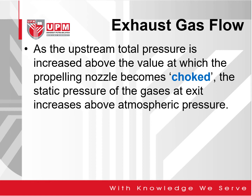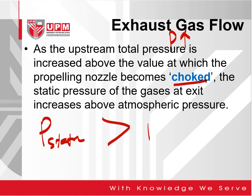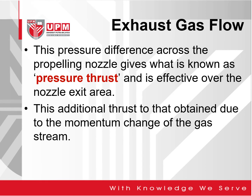As the upstream total pressure is increased above the value at which the propelling nozzle becomes choked, the static pressure — P-static — of the gases at exit increases above the atmospheric pressure. This pressure difference across the propelling nozzle gives what is known as the pressure thrust, which is effective over the nozzle exit area, in addition to the thrust obtained due to the momentum change of the gas stream.